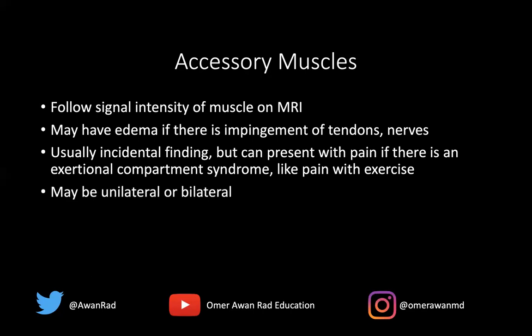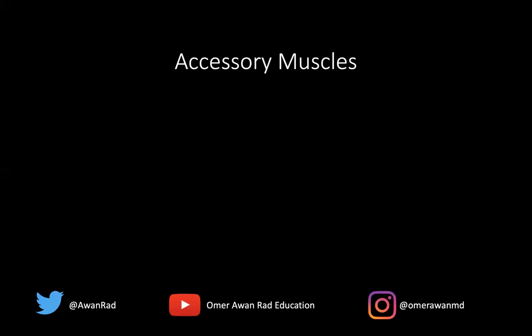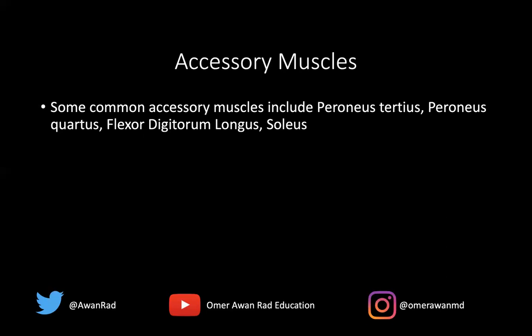The finding of an accessory muscle can be both unilateral or bilateral. The most common accessory muscles in the ankle in order are: the peroneus tertius, the peroneus quartus, the flexor digitorum longus, and then the soleus. So the soleus is the fourth most common accessory muscle in the ankle. The peroneus tertius is usually anterolateral, the peroneus quartus is usually posterolateral, and the flexor digitorum longus is seen adjacent to where the normal muscle and tendon is.